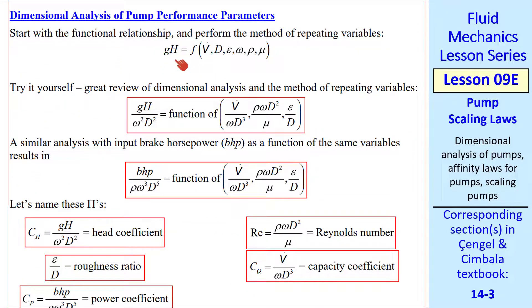Let's start with the net head of the pump. Gravitational constant g and net head h typically occur together, so in our functional relationship we use gh as the dependent variable. And it's a function of volume flow rate, pump diameter, roughness of the pump walls, rotational speed, density of the fluid, and viscosity of the fluid.